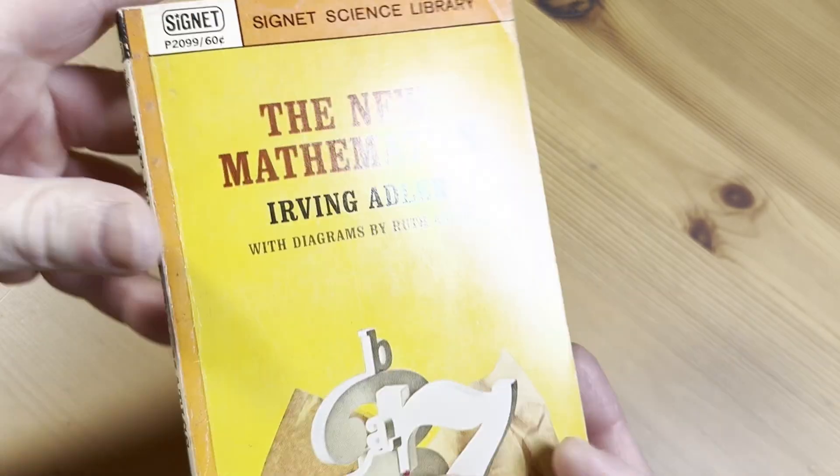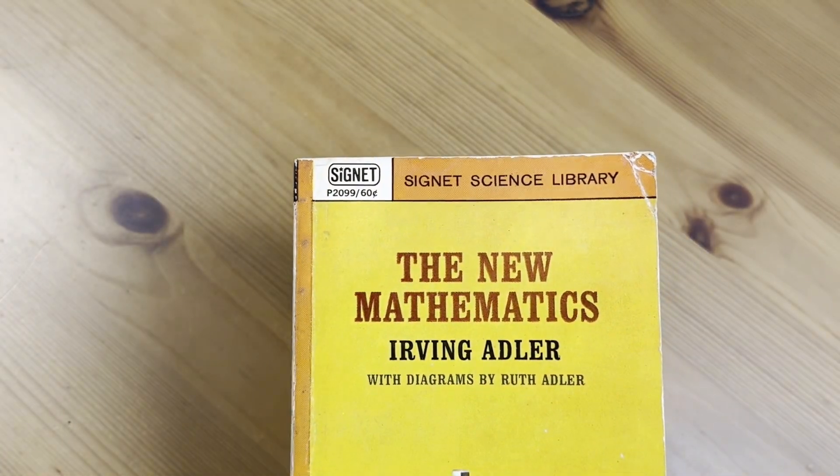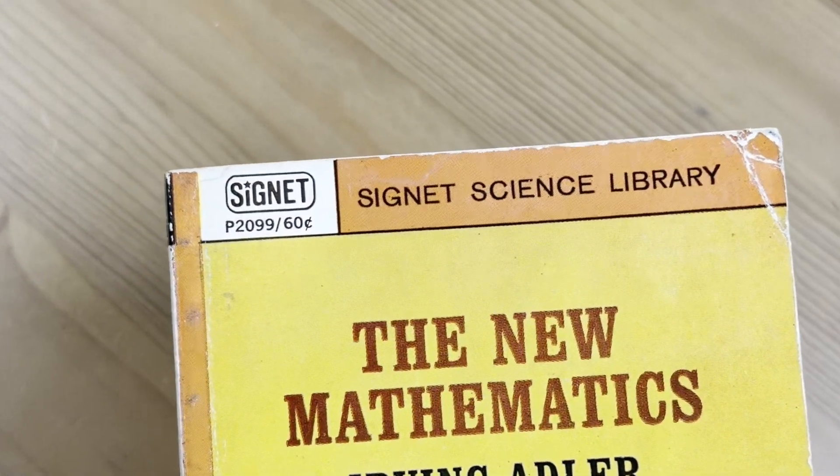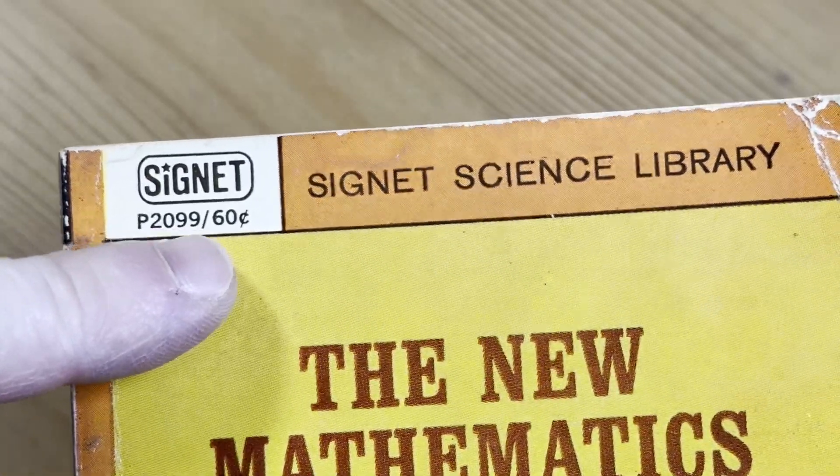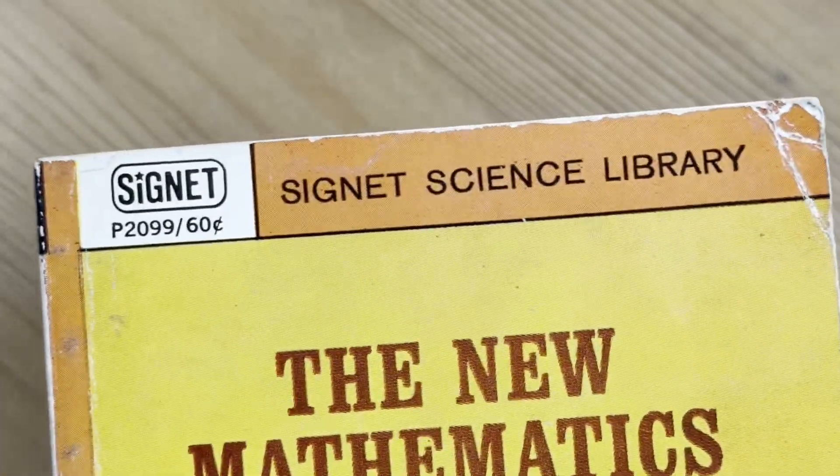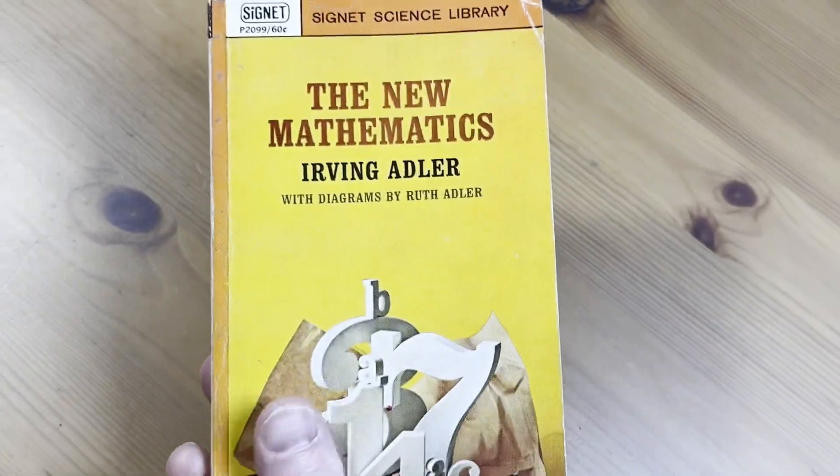This is a very small book, and it's very old. You can see here it has the price that it was originally sold for, which was 60 cents. That's right. You could buy this for 60 pennies back in the day. Pretty cool.